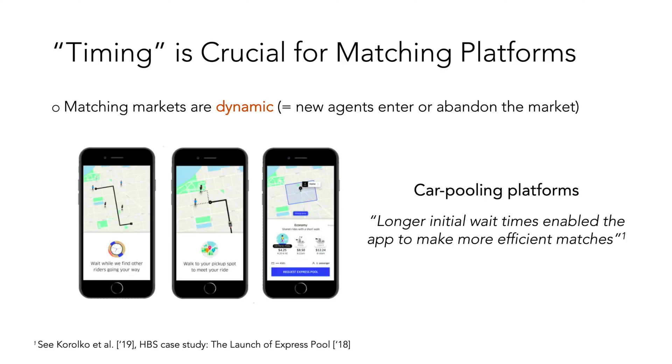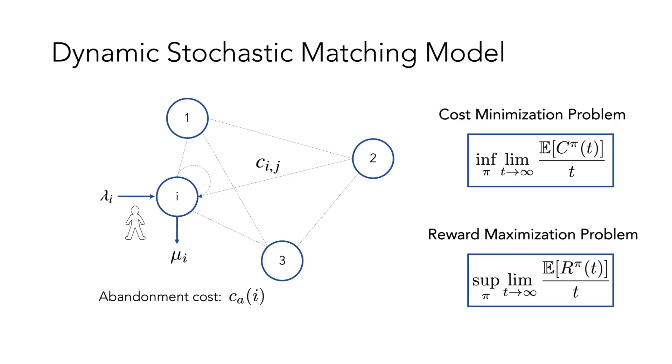However, riders can become impatient and cancel their ride. So how should platforms optimally resolve this trade-off in a networked economy? It all starts with the right modeling angle.